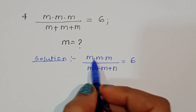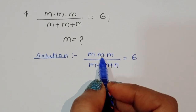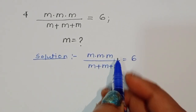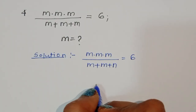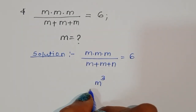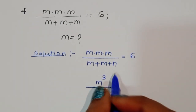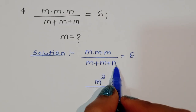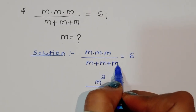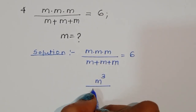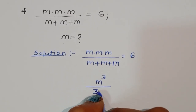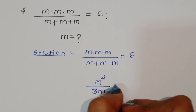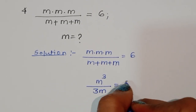We can simplify: m times m is m squared, times m is m cubed. So the numerator becomes m cubed. The denominator m plus m plus m becomes 3m. So we have m cubed divided by 3m, equal to 6.